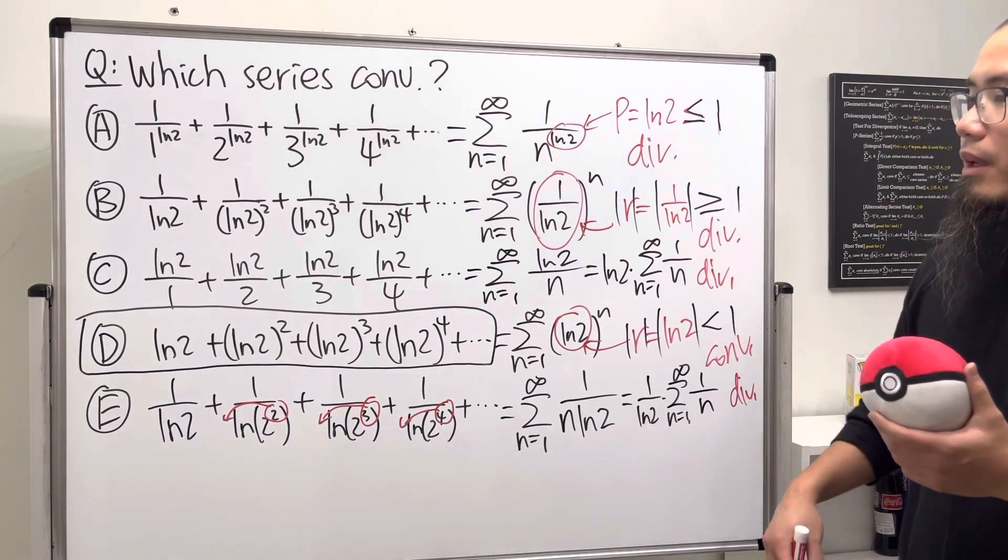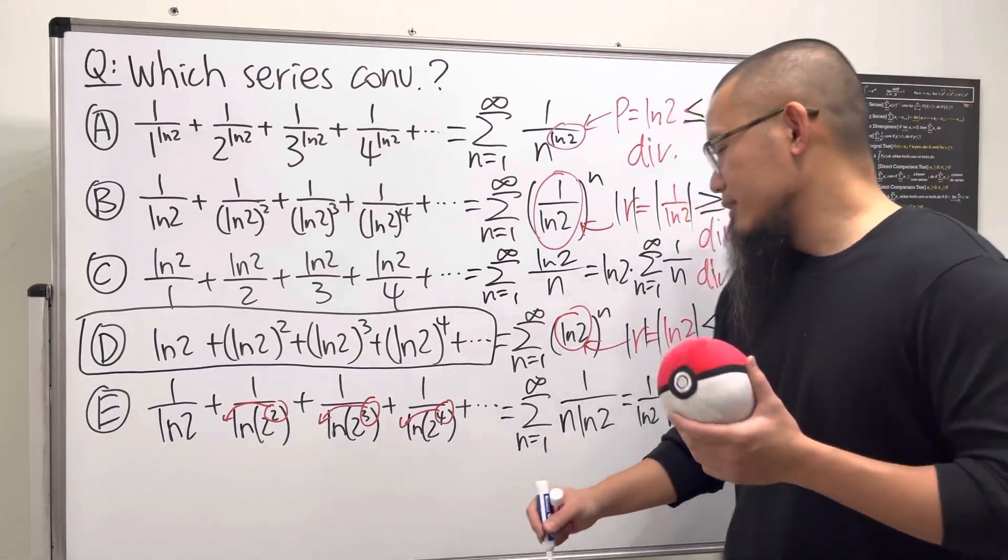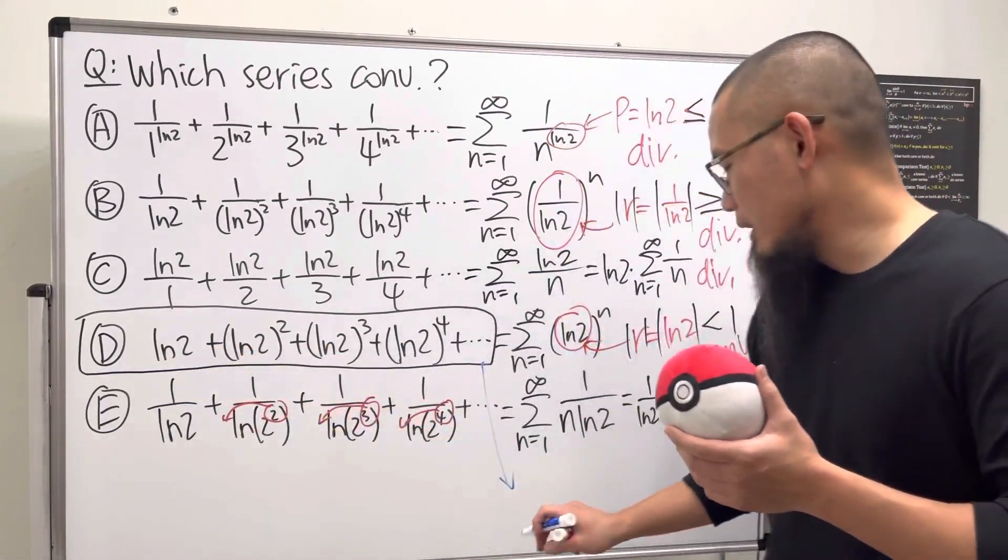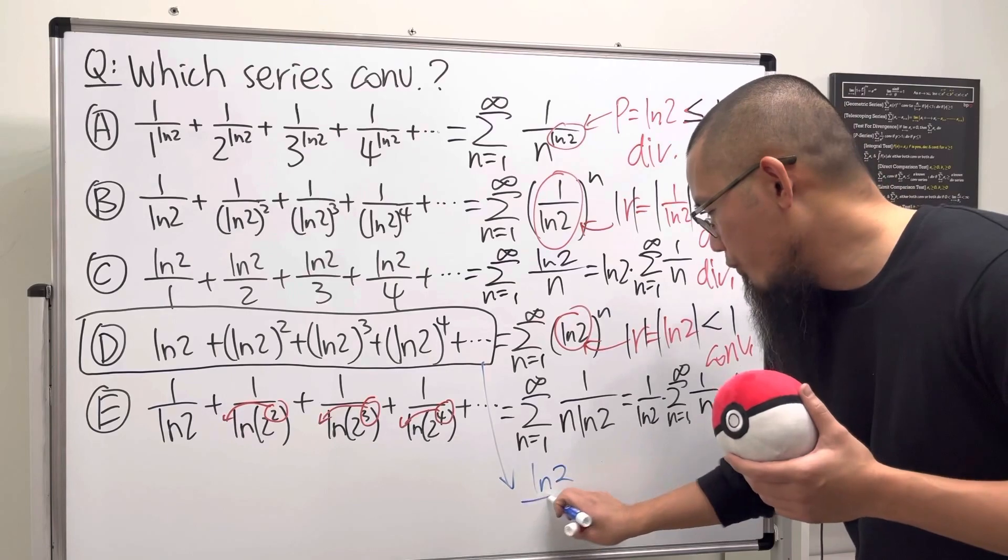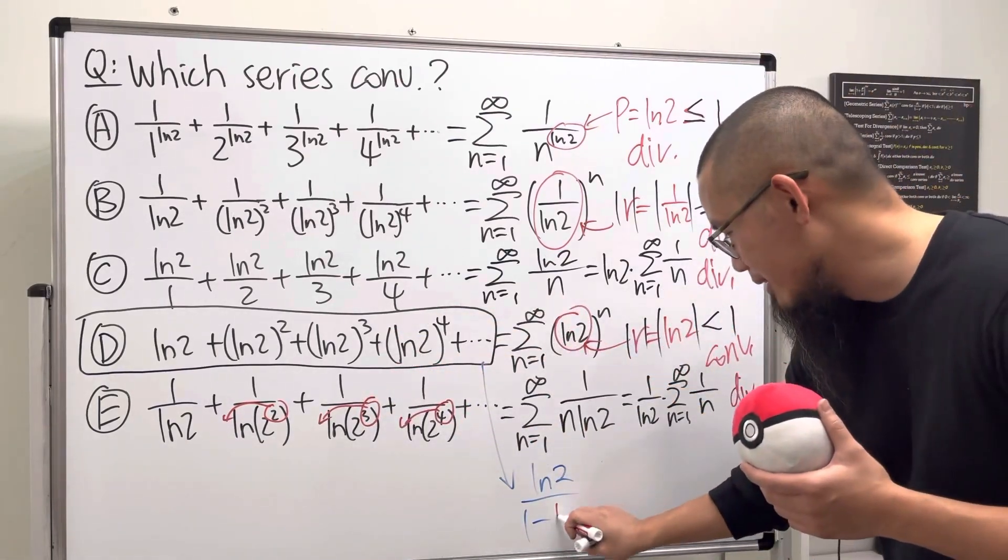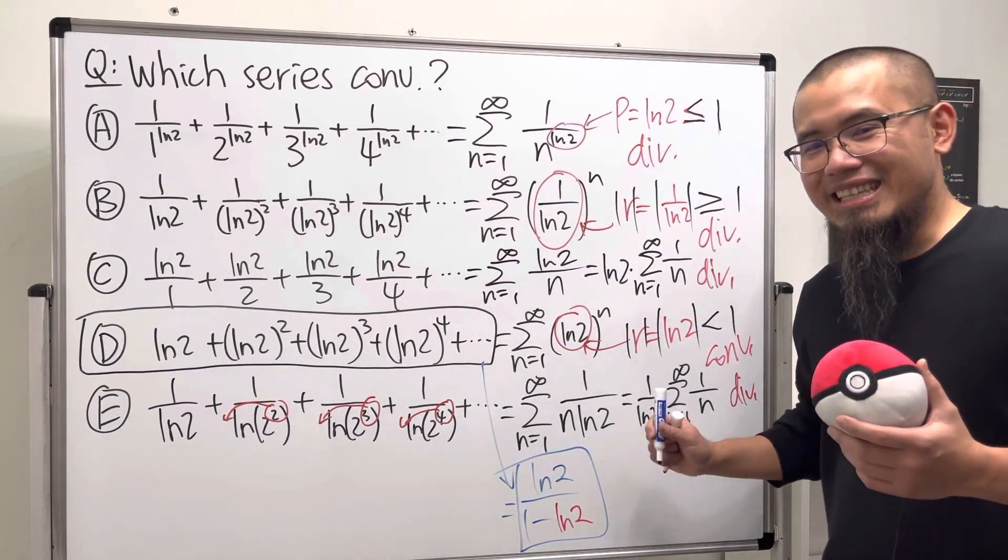But anyway, D converges. And as a little bonus, I will tell you this right here converges to the first term, which is ln2, over 1 minus the common ratio, which is also ln2. All right, so that's it.